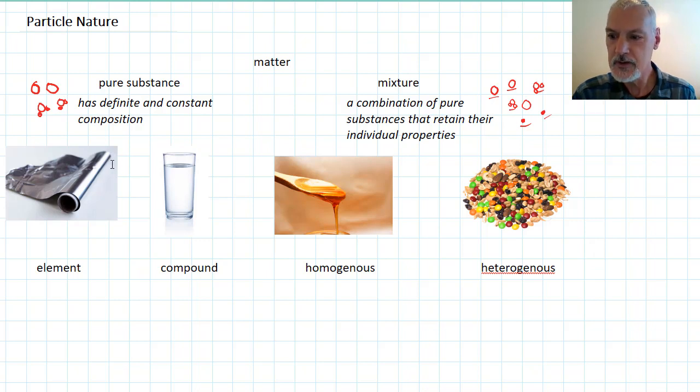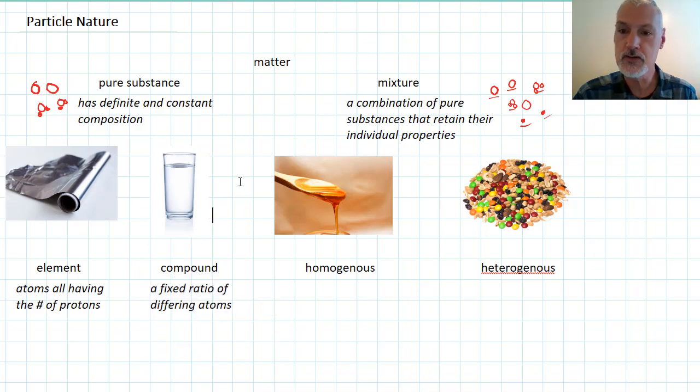Now, we then further take our categories and further subdivide them. In a pure substance, we call things elements, where we have all atoms that are present in that material have the same number of protons. So in my sample of aluminum foil, we would find that every single atom in there would have essentially 13 protons in it. Water, on the other hand, is a mixture of atoms in a fixed ratio. H2O. Two hydrogens and one oxygen.